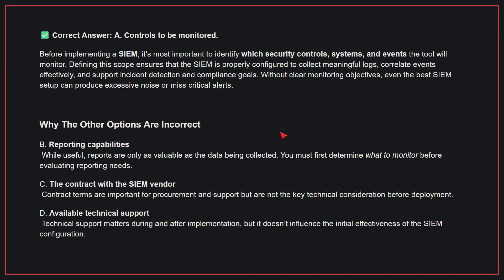Why are the other options incorrect? B: Reporting capabilities — while useful, reports are only as valuable as the data being collected; you must first determine what to monitor before evaluating reporting needs. C: The contract with the SIEM vendor — contract terms are important for procurement and support but are not the key technical consideration before deployment. D: Available technical support — technical support matters during and after implementation, but doesn't influence the initial effectiveness of the SIEM configuration. Therefore, the correct answer is A.